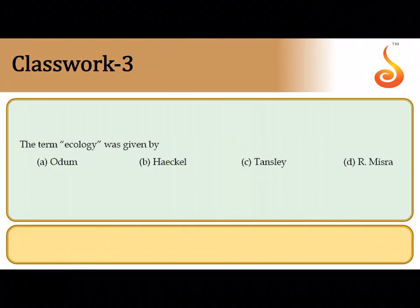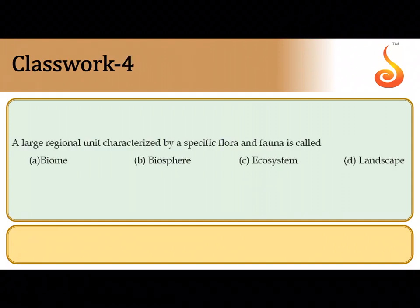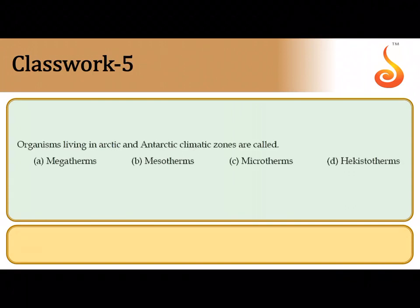The third question: the term ecology was given by Ernst Haeckel — the science of studying organisms in relation to their surrounding environment. The fourth question: a large regional unit spread over a vast geographical area is a biome. A biome is a group of ecosystems spread over a vast geographical area, so it is option A.